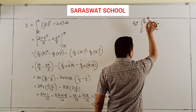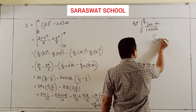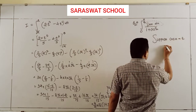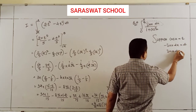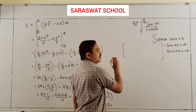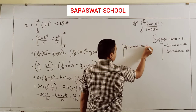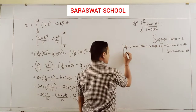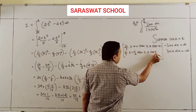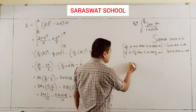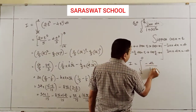So suppose cosx equals t. Then minus sinx dx = dt, so sinx dx = minus dt. Change the limits first: if x tends to 0, t tends to cos0 = 1. If x tends to 90°, t tends to cos90° = 0. So when 0 is put, limit becomes 1; when 90 is put, limit becomes 0.